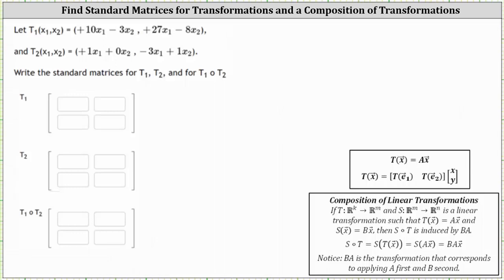We were given T1 of X and T2 of X and asked to write the standard matrices for T1, T2, and for T1 of T2. The form of a matrix transformation is T of vector X equals matrix A times vector X, where matrix A is a transformation matrix or standard matrix. So if we can write T1 and T2 in this form, we can determine the standard matrices.